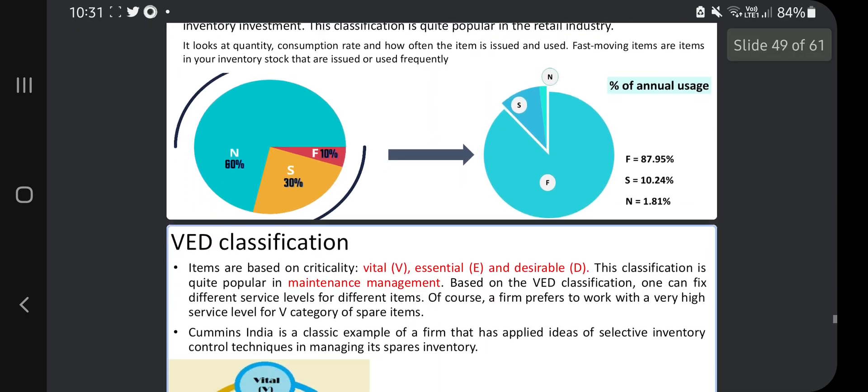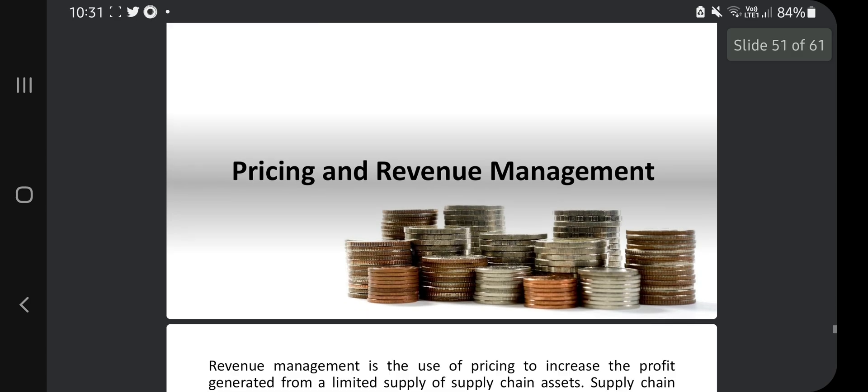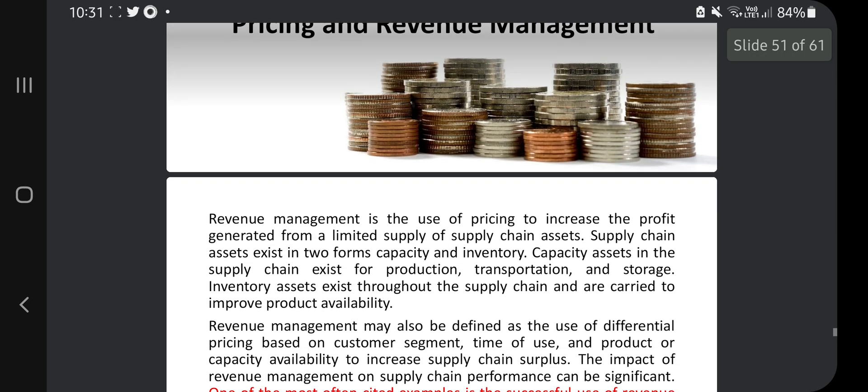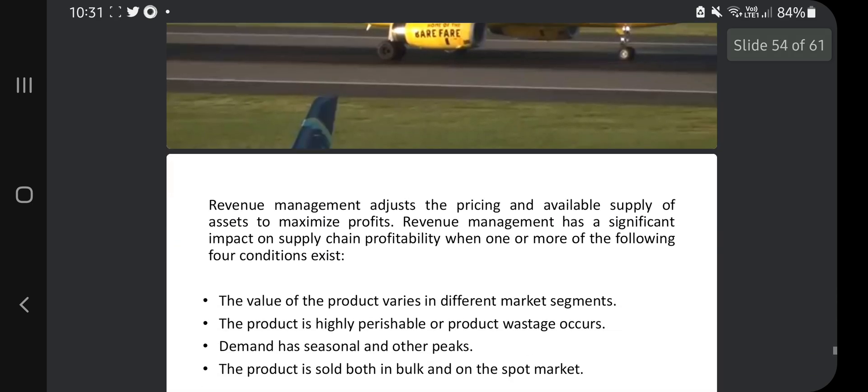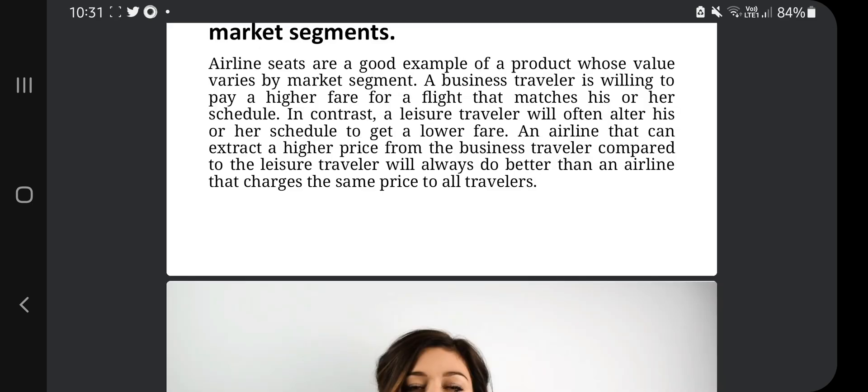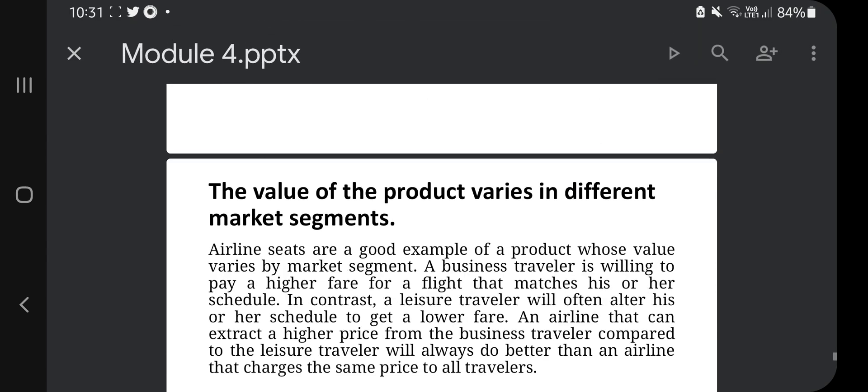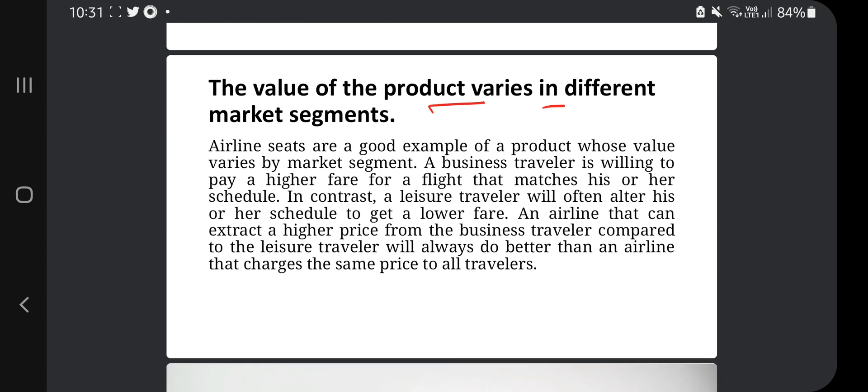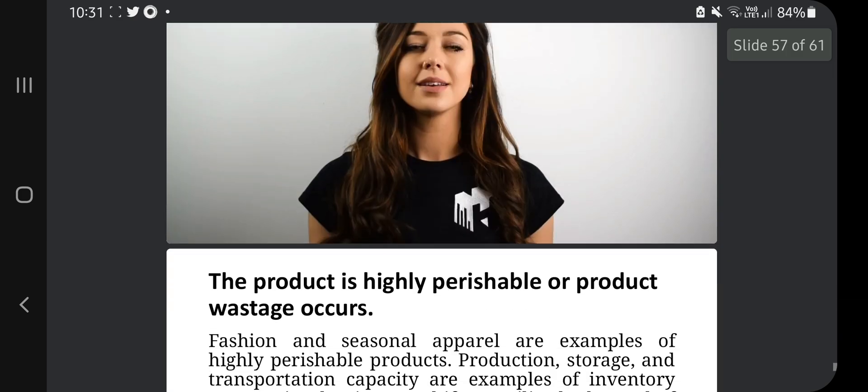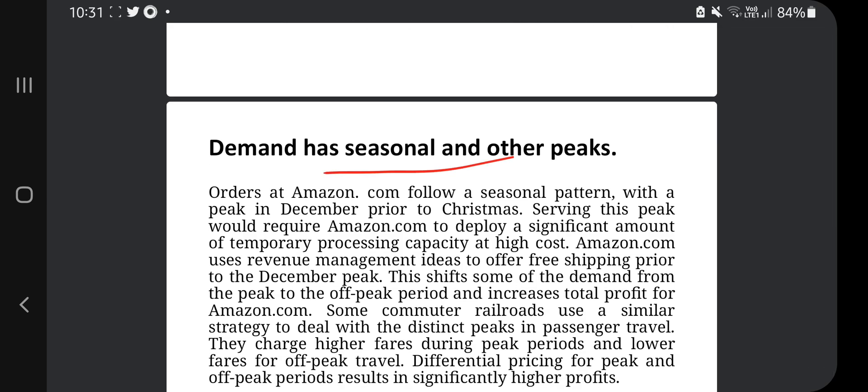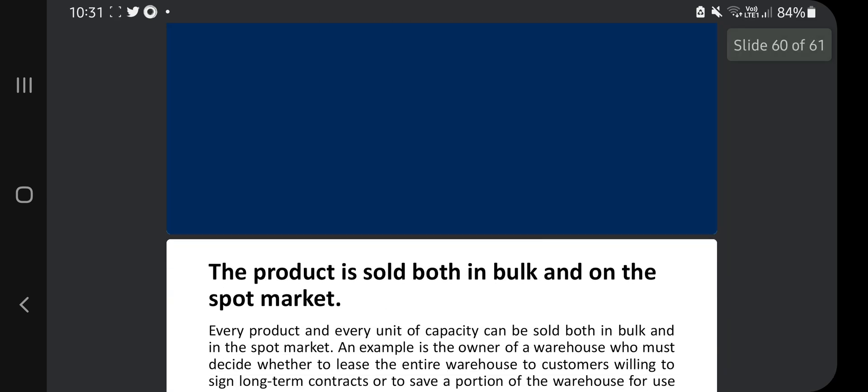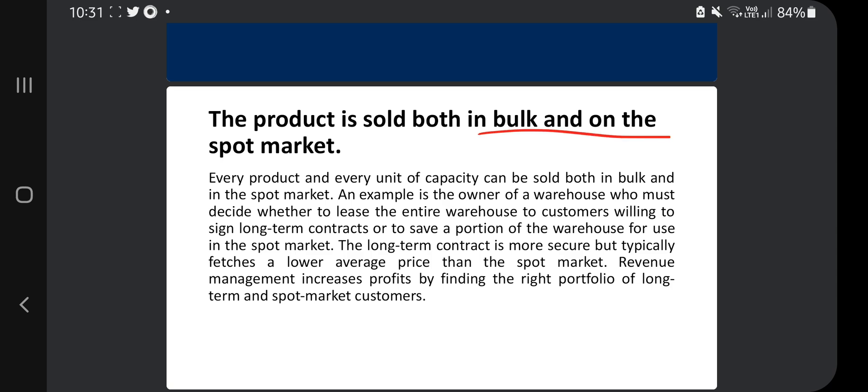Last one is the pricing and revenue management. Here you need to know factors - four main key points are there. These are the four key points. The first one is the value of the product varies in the market segments. If the market changes, the value of the product will change. It is highly perishable or the wastage occurs. Demand has seasonal and other peaks. And the product is sold both in bulk and on the spot market.